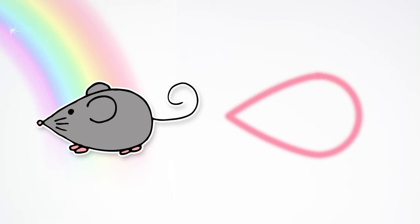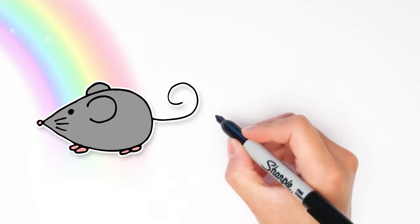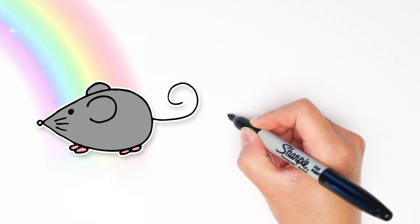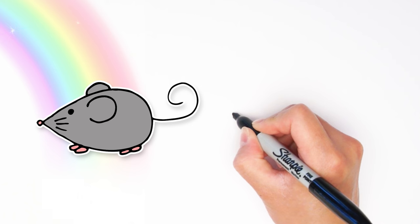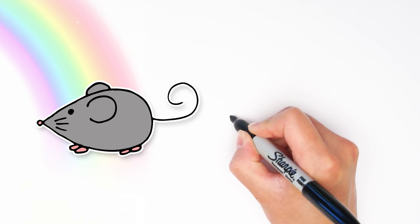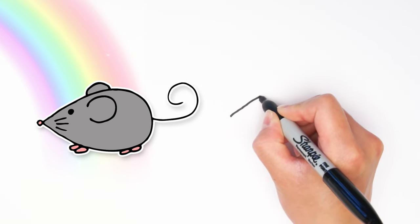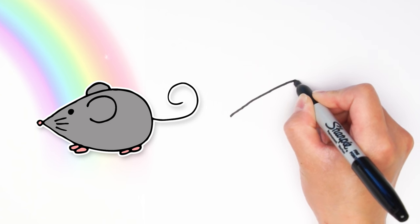This will be the shape of the mouse's body. Now you can grab your pen and we'll draw that teardrop shape, starting right here at the tip where the nose will be, going up and around.